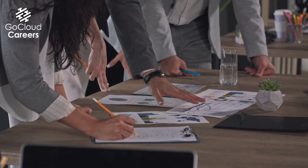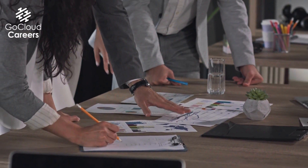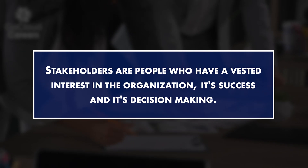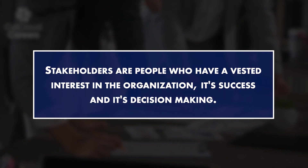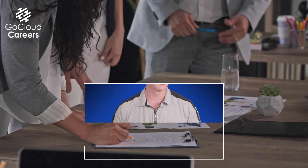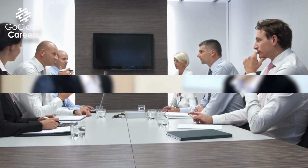Next, we need to conduct a formal stakeholder review of the new business architecture. Stakeholders are people who have a vested interest in the organization, its success, and its decision-making. We need to confirm that the architecture will satisfy all stakeholder requirements. Often, architectural choices will help one part of the organization but place challenges on another, meaning we as enterprise architects or cloud architects will often have to do some negotiation between stakeholders to get to the final solution. Then we need to get buy-in from all stakeholders so they will support the changes when they're finally implemented.